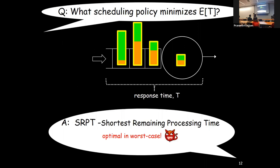SRPT is actually optimal in a very strong sense — it's optimal in the worst-case sense. Even with a stream of jobs coming in with any arrival sequence of arrival times and job sizes, without seeing them ahead of time, you still want to do SRPT. The first analysis of it in an MG1 setting was done not all that long ago.